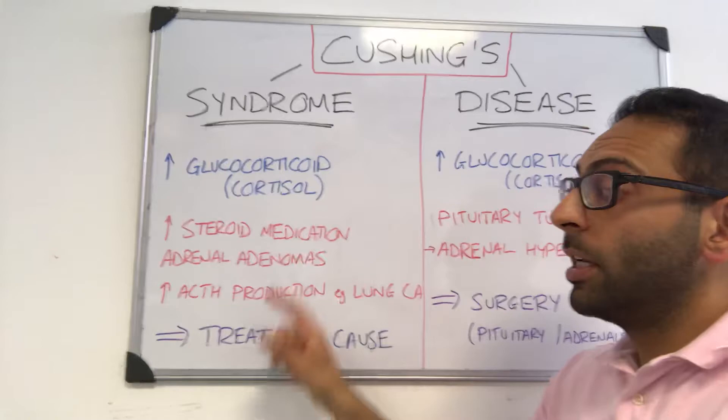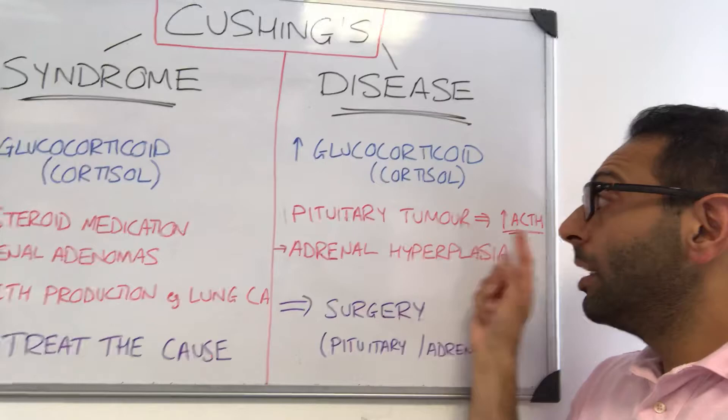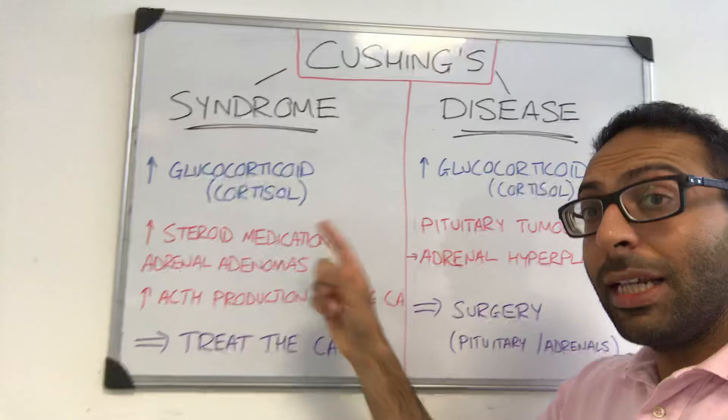So to summarize: Cushing's disease is a pituitary tumor leading to too much ACTH, leading to adrenal hyperplasia and therefore increased glucocorticoid levels. Cushing's syndrome is increased levels due to pretty much any other reason going on in the body. Hope this helps.